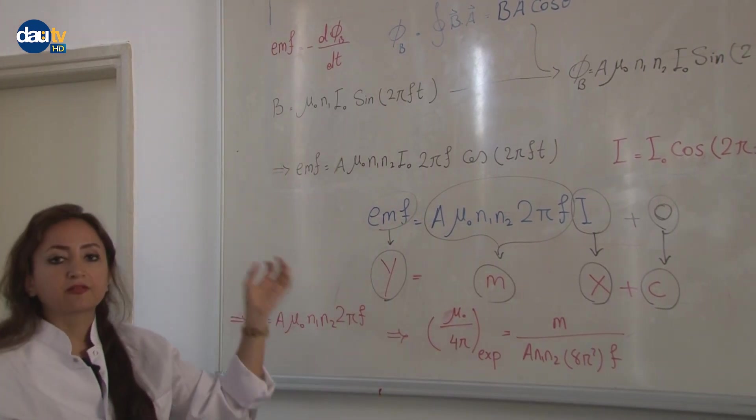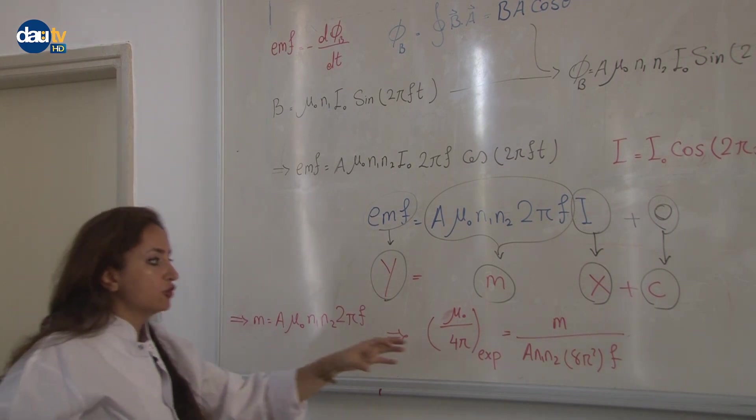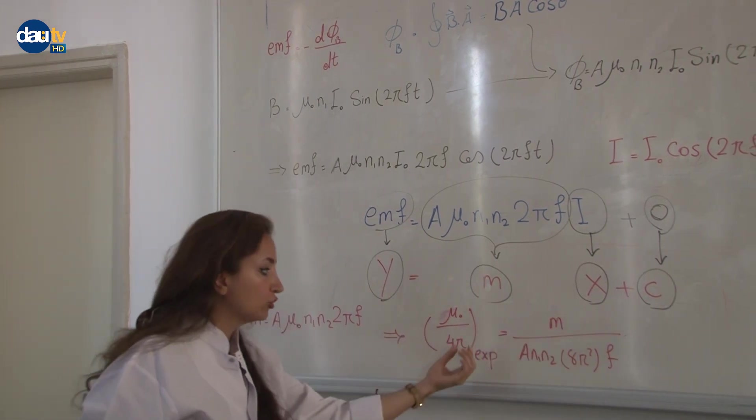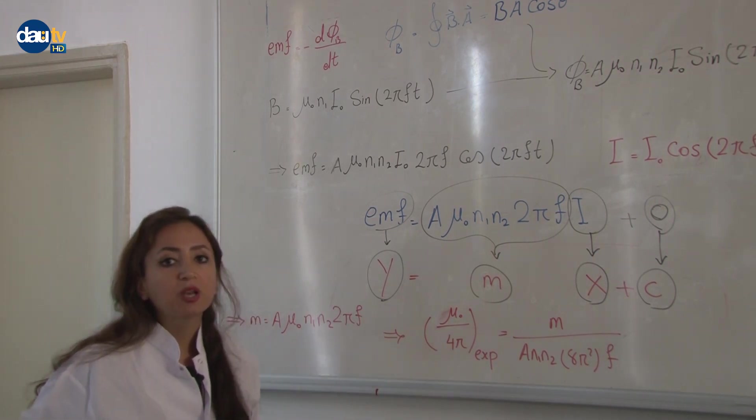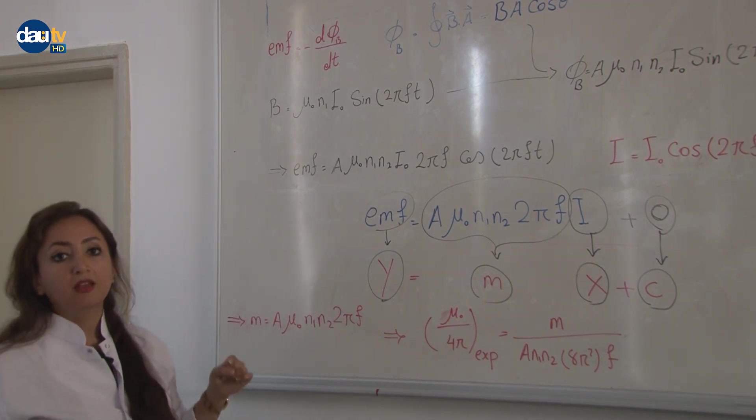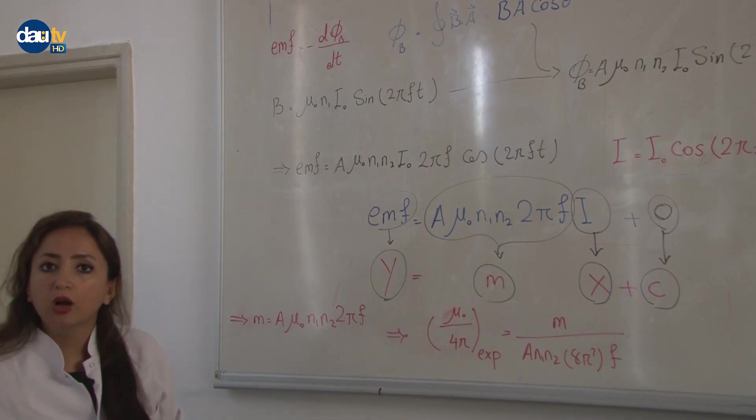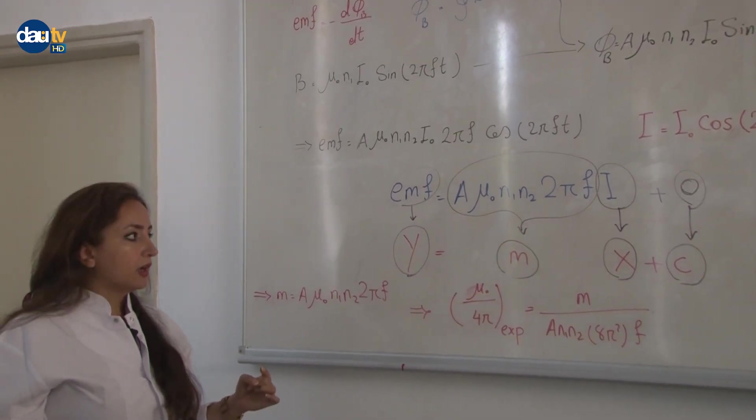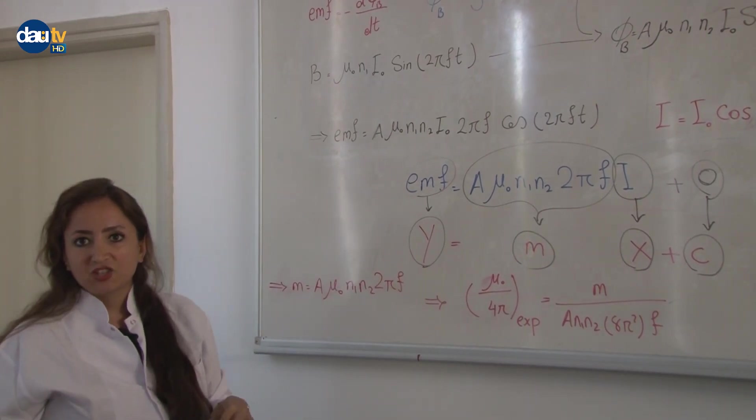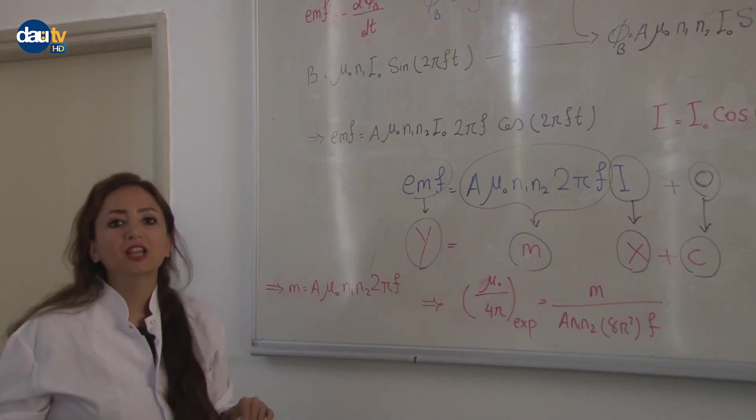we just substitute our data here to define our mu zero over 4 pi, which is the experimental value of this experiment. Then we compare it with the theoretical one, which is 10 to the power of minus 7, to define our error percentage. Let's go to do the experiment.